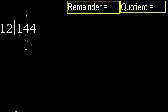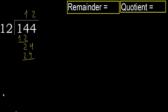Next: 24. 12 multiplied by 2 is 24, which is not greater. Ok, subtract: 24 minus 24 equals 0.